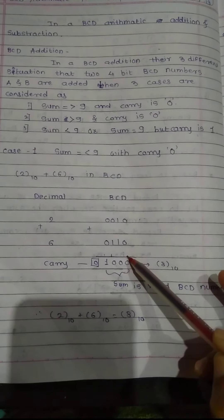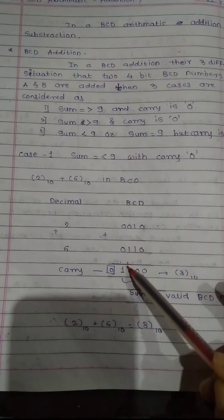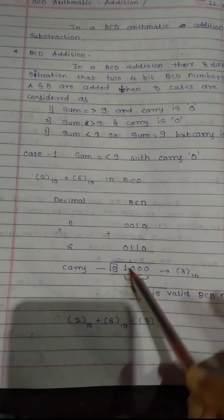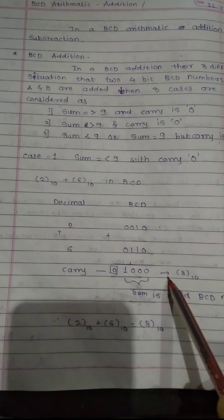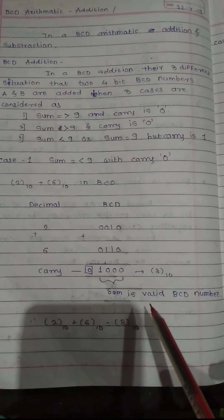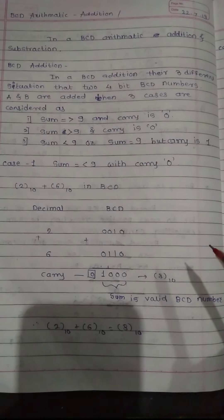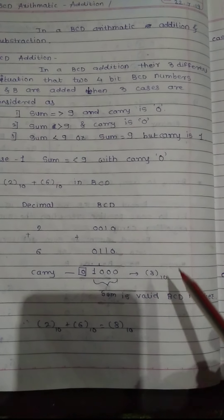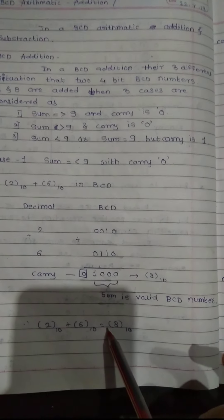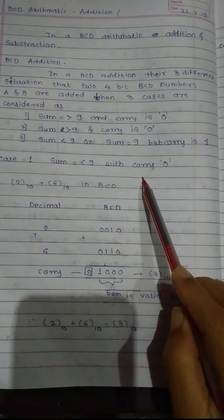Performing binary addition: 0 plus 0 is 0, 1 plus 1 is 0 carry 1, 0 plus 1 plus carry 1 is 0 carry 1, 0 plus 0 plus carry 1 is 1, carry out is 0. The result is 1000, which represents 8. This is a valid BCD number since it is between 0 and 9, and carry is 0, so no correction is required.